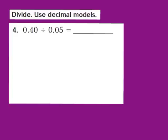Now let's take a look at question number 4 together. The directions say to divide and to use decimal models. For question 4, the problem is 40 hundredths divided by 5 hundredths. Remember, there are certain steps we follow when we use our decimal models for division. Step number 1 says to shade decimal models to represent the dividend — in this case, 40 hundredths. Go ahead and pause the video, draw the 10 by 10 grid, and shade in 40 hundredths. We'll check together in just a minute.